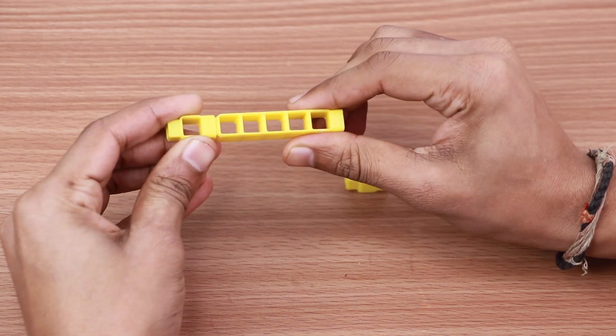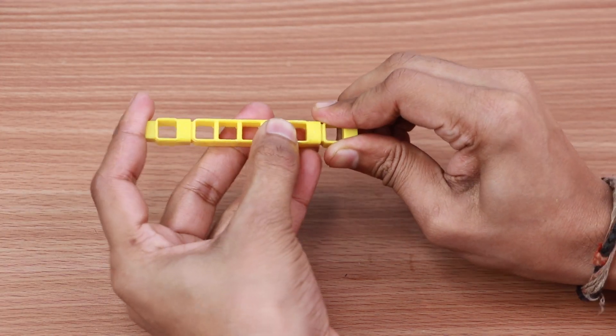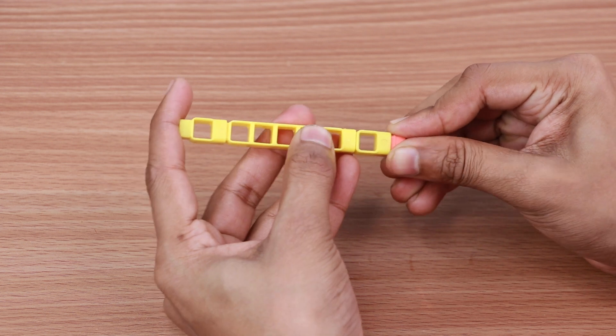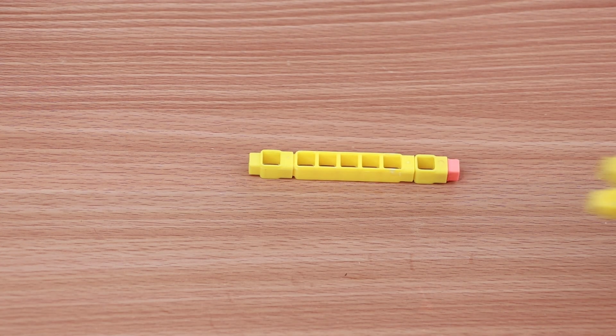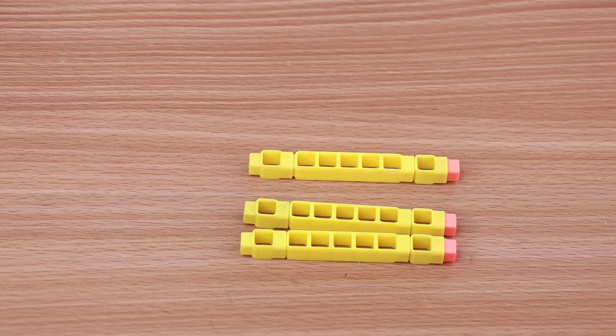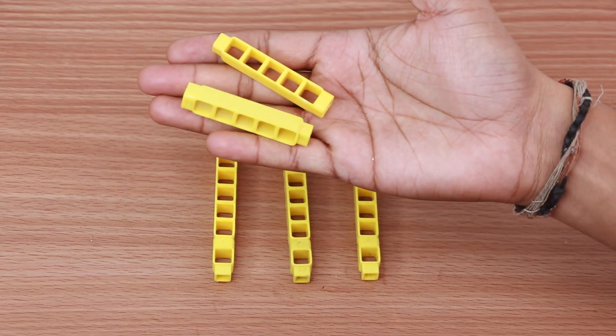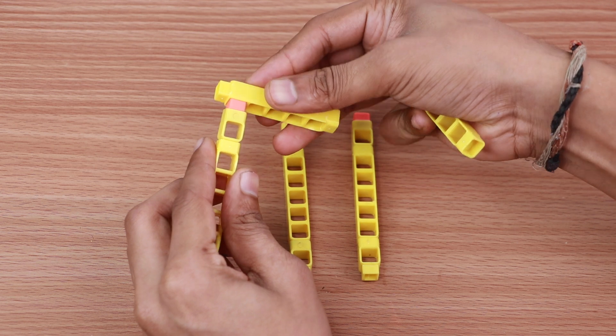Take two one-hole beams, one five-hole beam and one mm coupler and join them. Repeat this step with these parts to create two more pieces like that. Now take two five-hole beams and attach them to the previous structures.